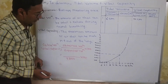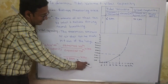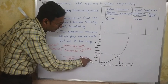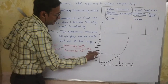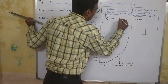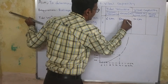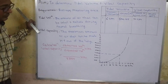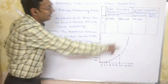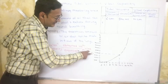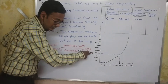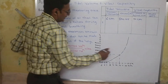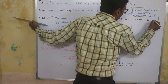The tidal volume is between the 0 mark and 1000 mL, so it is approximately equal to 500 mL, which is quite normal. And the vital capacity is 4000 mL.